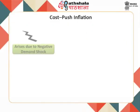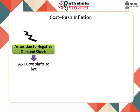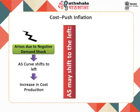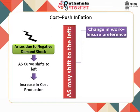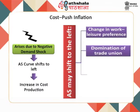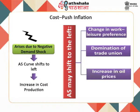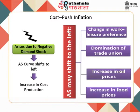Cost-push inflation arises due to a negative supply shock in an economy. When there is a supply shock, there is a shift in the aggregate supply curve. When the supply shock is negative, the aggregate supply curve shifts to the left, implying an increase in the cost of production. The aggregate supply curve may shift to the left due to a change in work-leisure preference, domination of trade unions, increase in oil prices, or increase in food prices.